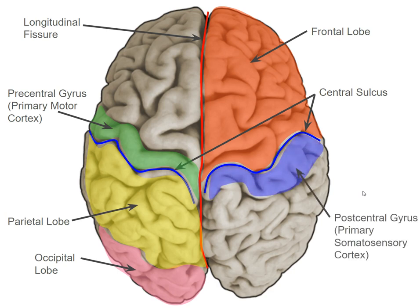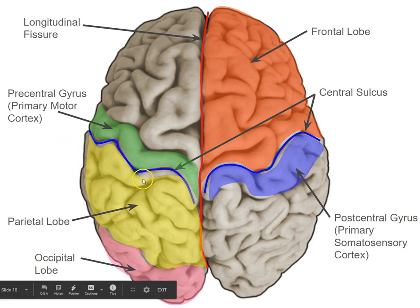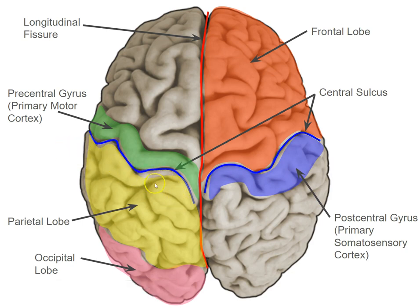Just caudal to the central sulcus is the postcentral gyrus, which is also primary somatosensory cortex. This is the first part of cortex that gets input from the body about touch. Whenever you feel touch on different parts of the body, you'll actually get activity in different parts of primary somatosensory cortex. It is located in the parietal lobe, at the anterior part of the parietal lobe. And here would be the primary motor cortex in the right hemisphere.